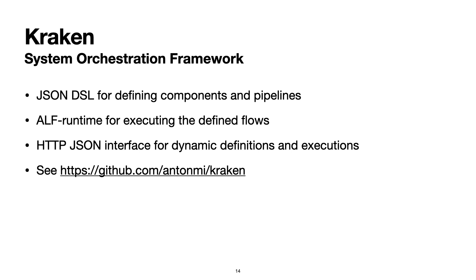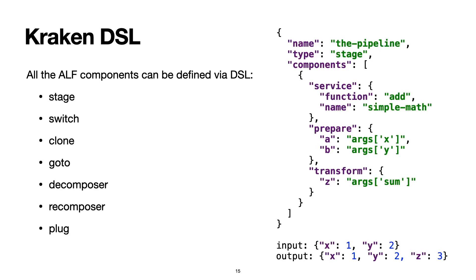That's the basic idea behind Kraken: a JSON DSL — JSON-driven development — where you just specify JSONs, and under the hood Octopus creates service mappings while the runtime builds all these pipelines. You have the same pipelines as in Alf — with all these processes — and Kraken provides an interface for defining and calling everything.